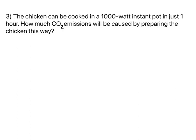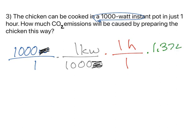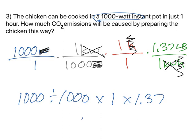Now let's try an instant pot. This chicken can also be cooked in a 1,000-watt instant pot for just one hour. Same idea: start with 1,000 watts, convert using 1,000 watts equals 1 kilowatt, then multiply by one hour, then 1.37 pounds per one kilowatt hour. Kilowatts cancel with kilowatts, hours cancel with hours, and we're in pounds. So 1,000 divided by 1,000 times 1 times 1.37 gives 1.37 pounds of CO2.